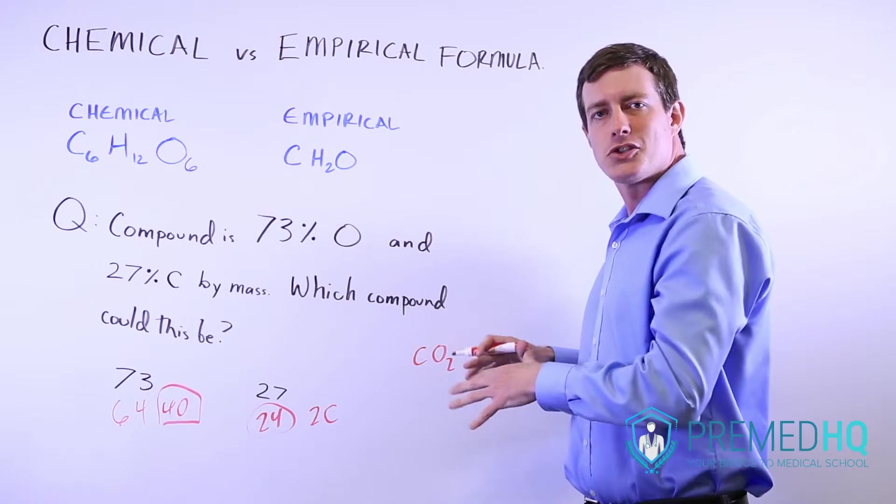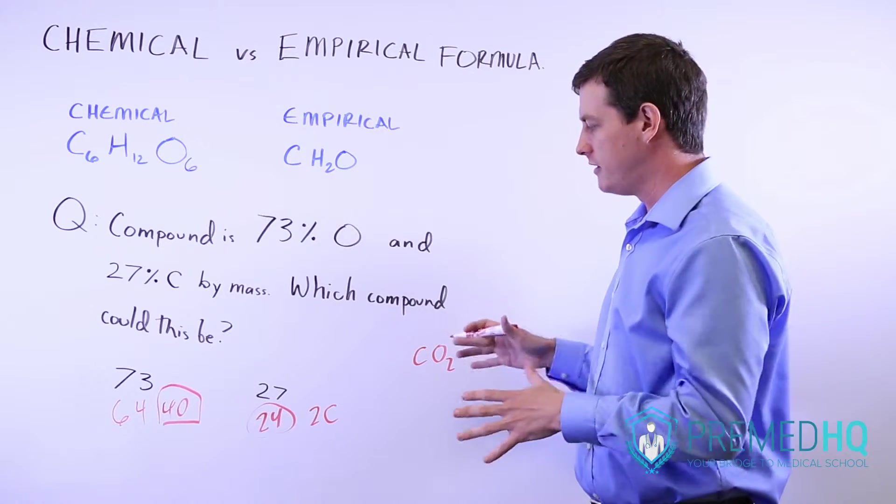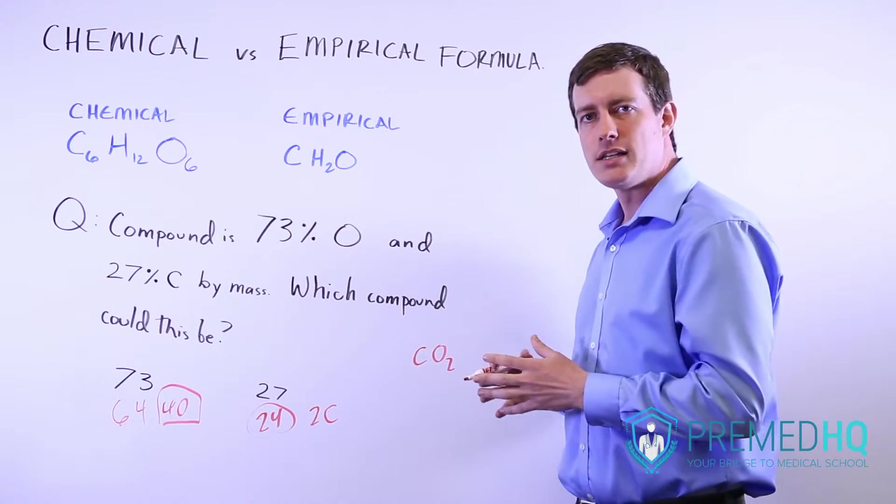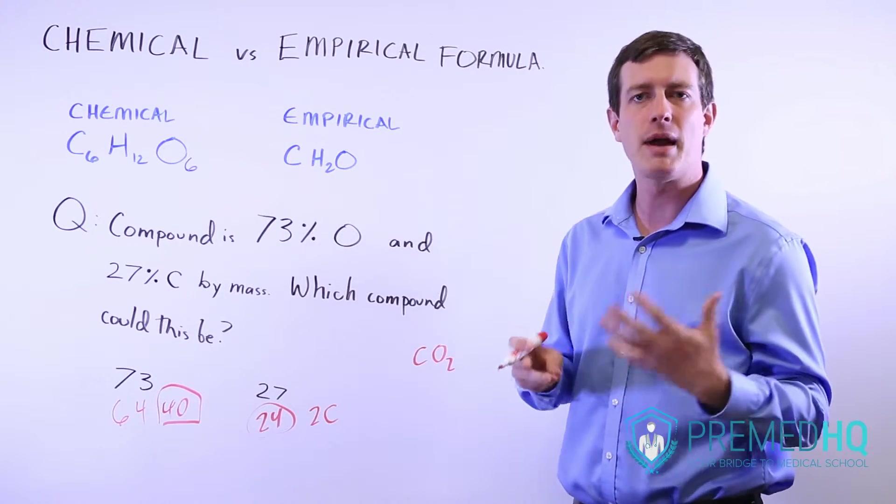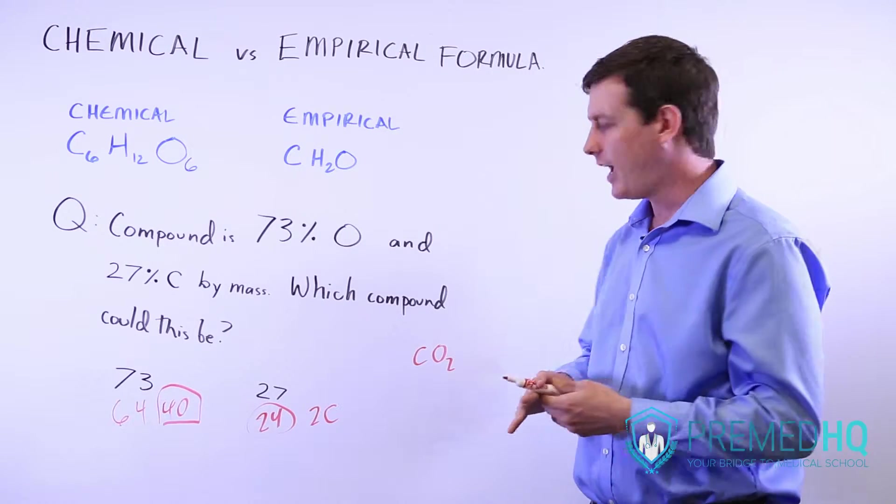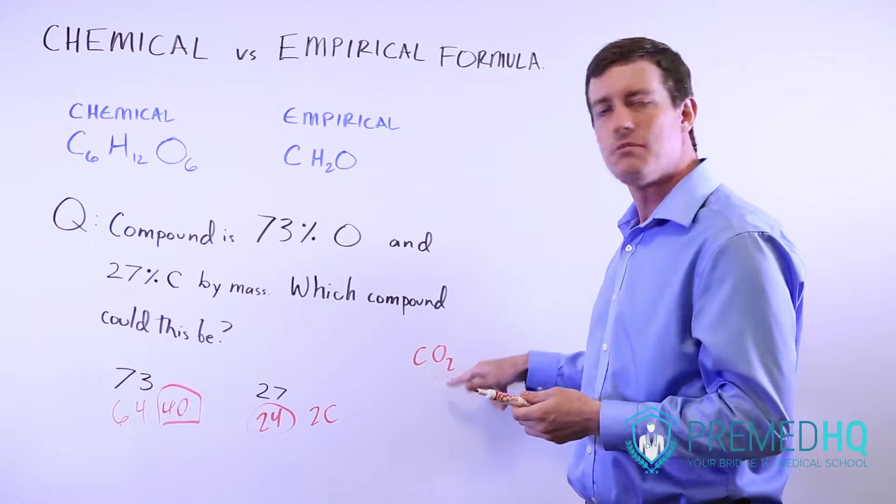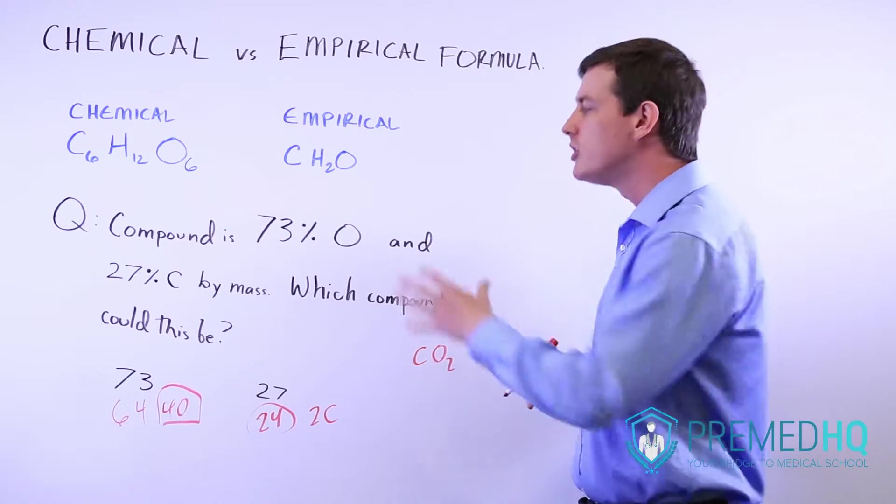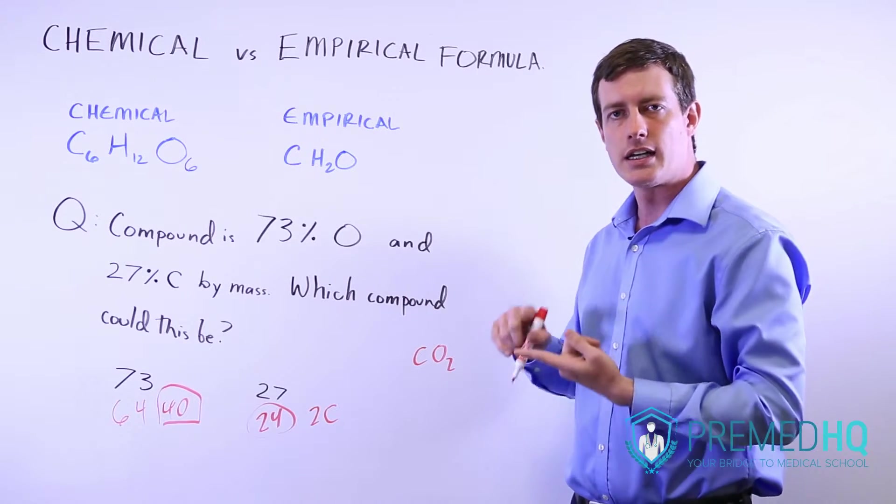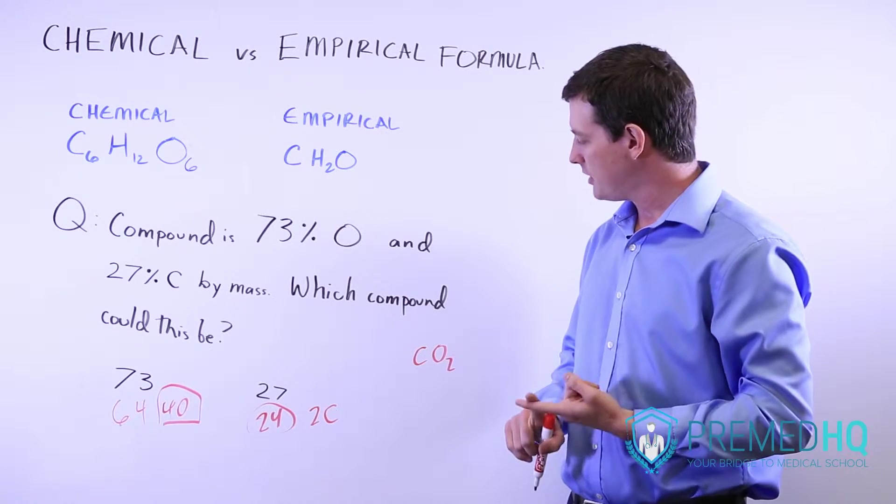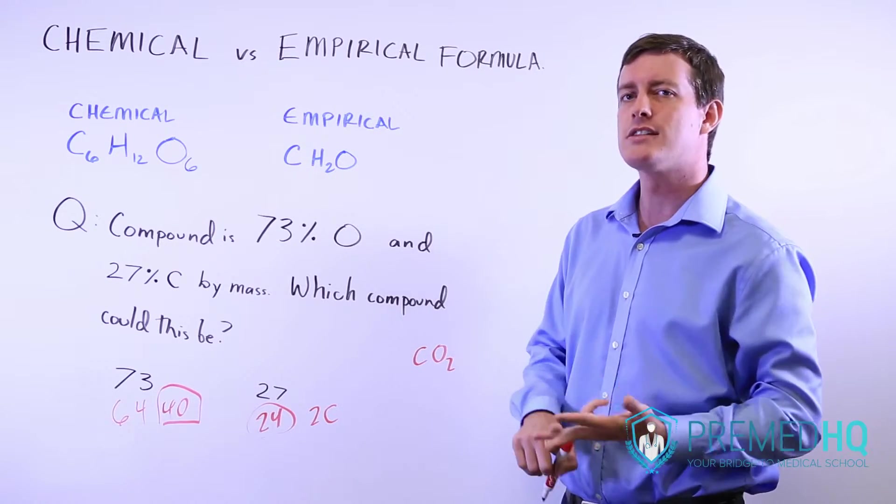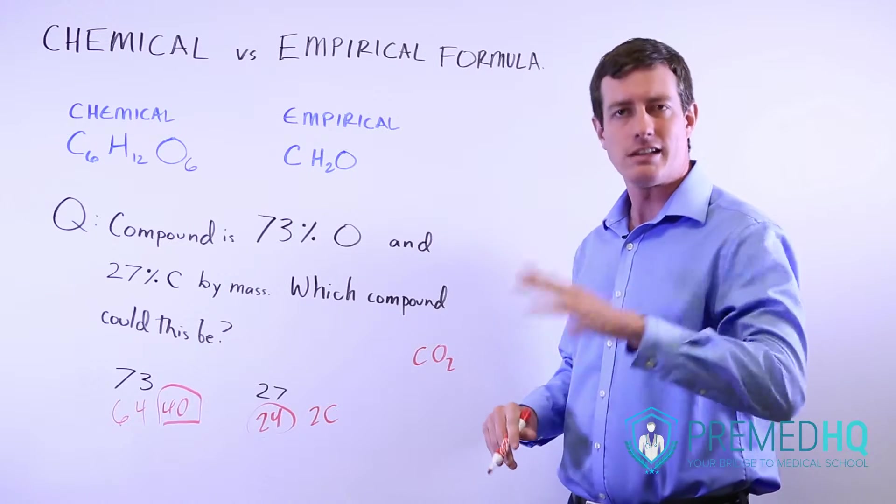Now, looking at the answer choices, you'll often be able to deduce that it's only one compound. Or they might give you a mass - they might say it has a mass of 44 grams per mole or 88 grams per mole. Then you can scale this empirical formula up. The compounds could be CO2 (carbon dioxide), C2O4 (oxalate), C3O6, and so on.